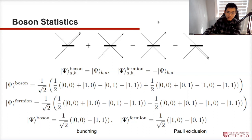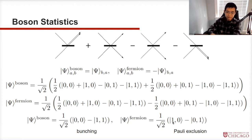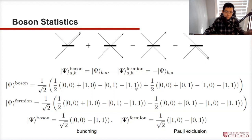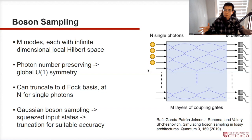This means photons always bunch together. For the fermion wave function, after simplification, zero-zero and one-one cancel out, leaving one-zero and zero-one — meaning fermions only exit from different ports and cannot occupy the same quantum state. This is the familiar Pauli exclusion principle. With this added complexity of the quantum nature of bosons and the complex structure of the interferometer, we can understand why boson sampling can be quite complex.